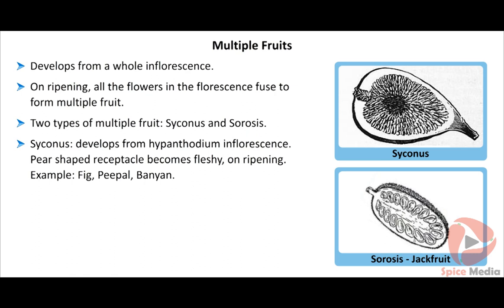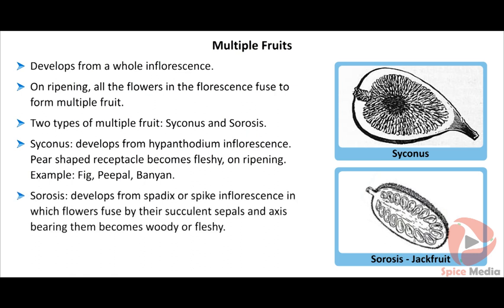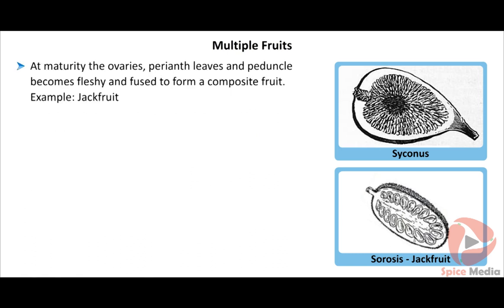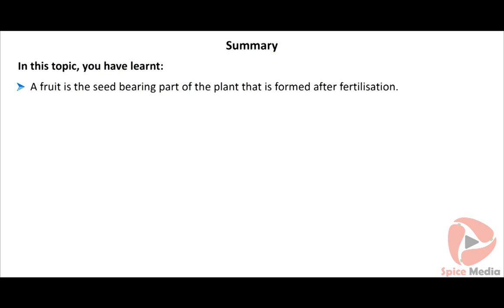Sorosus develops from a spadix or spike inflorescence in which flowers usually fuse by the succulent sepals; the axes bearing them become woody and fleshy at maturity. The ovaries, perianth leaves, and peduncle become fleshy and form a composite fruit. Example: jackfruit, which develops from a spadix inflorescence.